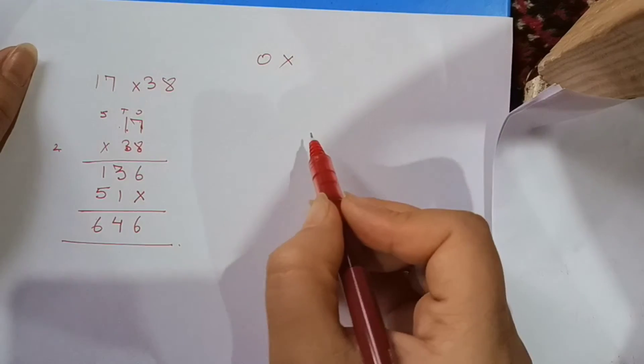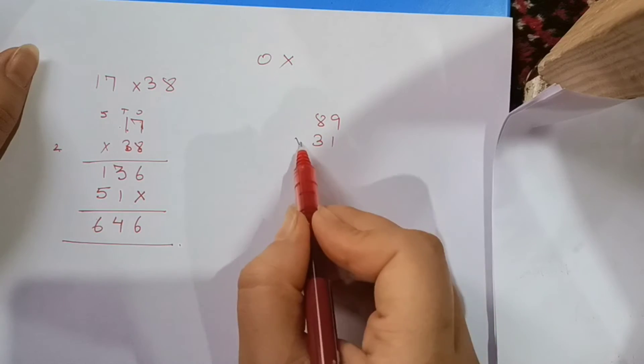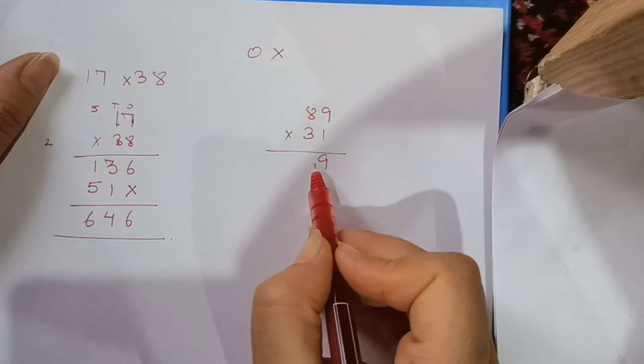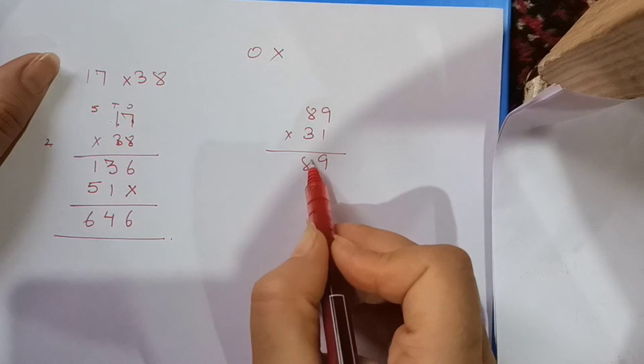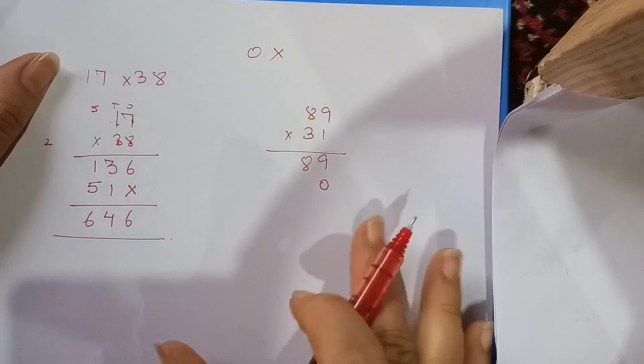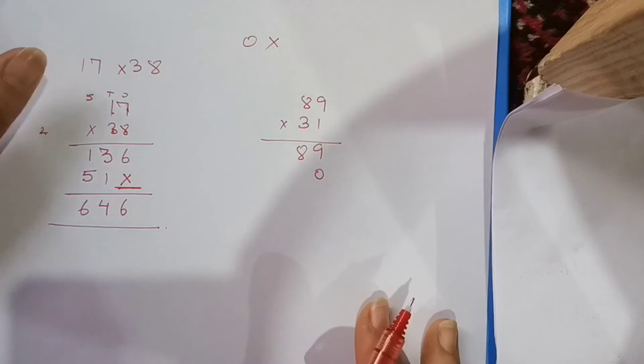We will do 89 with 31. Multiply, 1 times 9 is 9, 1 times 8 is 8. Here you can put 0 or cross this place, which is the same way, no value.